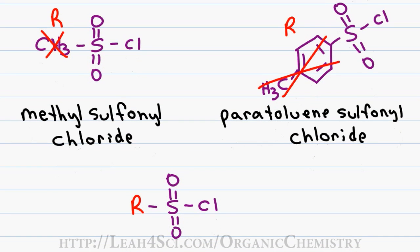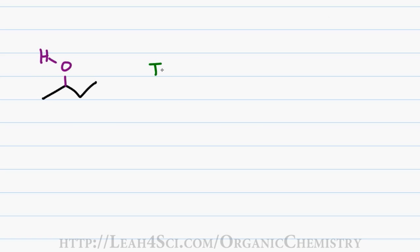In fact, if you go back to these molecules, not only don't you have to know the structure, but you can actually shorten them. The methyl sulfonyl chloride will be MSCl, the paratoluene sulfonyl chloride will be TSCl, and you can show the simplified mechanism as follows.